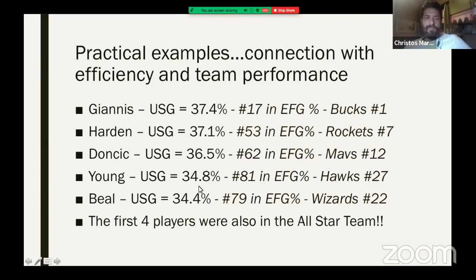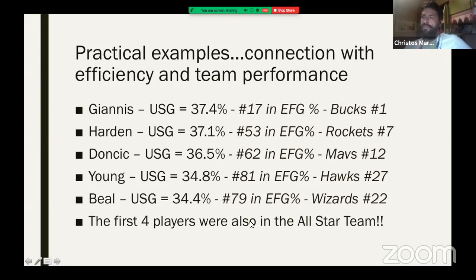Look at Trae Young and Bradley Beal. Their efficiency is lower than the other guys, and look at the ranking of the Hawks and Wizards — they're some of the worst teams. But since these guys are playing with the ball in their hands, they got selected to the All-Star game. This is the unfairness of the system when you don't look at advanced metrics like effective field goal percentage.